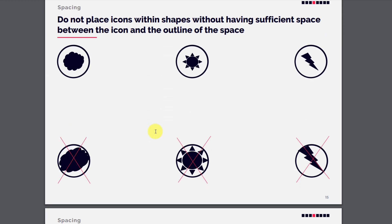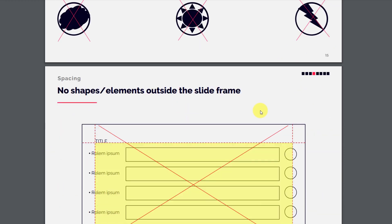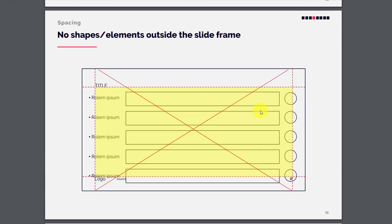Do not place icons within shapes without having sufficient space between the icon and the outline. You can see in the pictures that there is no space, or not sufficient space. You should have the icon and the outer circle with inner space — that is one big mistake many people make.